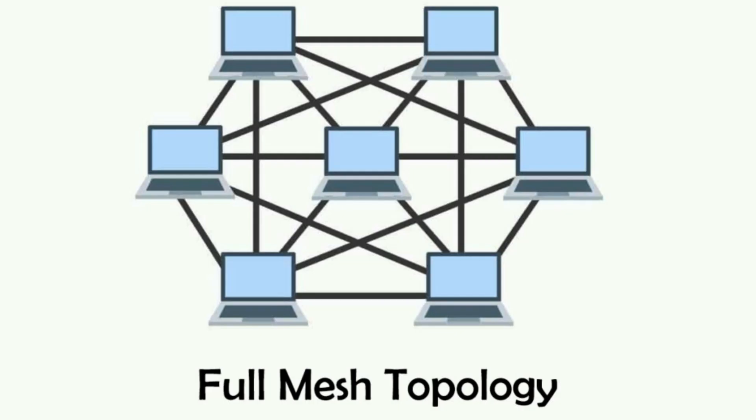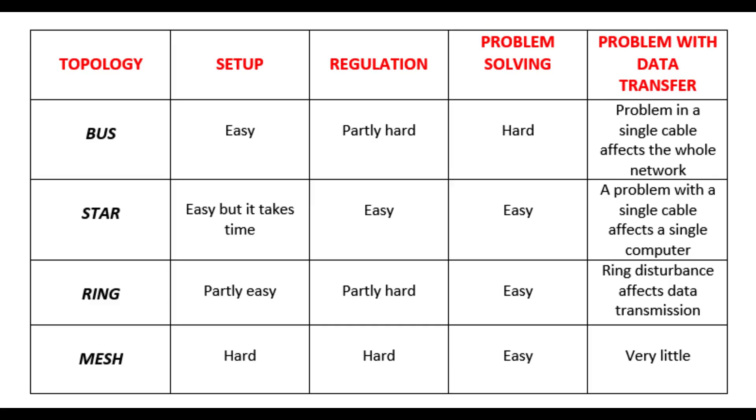Mesh topology. All ends of the network are interconnected. Thanks to this feature, data that wants to pass through one point can pass through another point in case of a problem. It is mostly used in WANs such as power plants, nuclear power plants, where uninterruption is required. Cost is never considered here because uninterruption is very important. The table on the screen shows a comparison of the topologies you have just listened to. Please study it carefully and discover the connections between them.